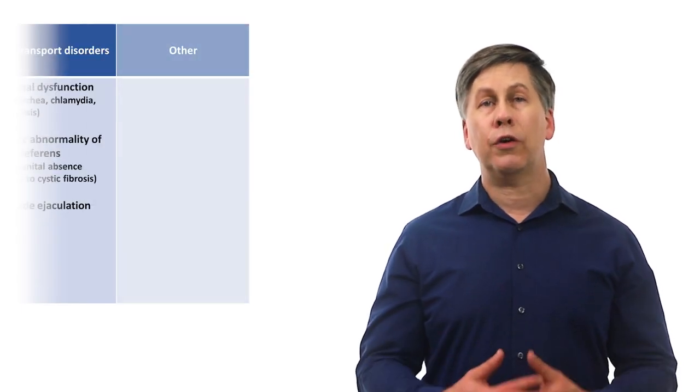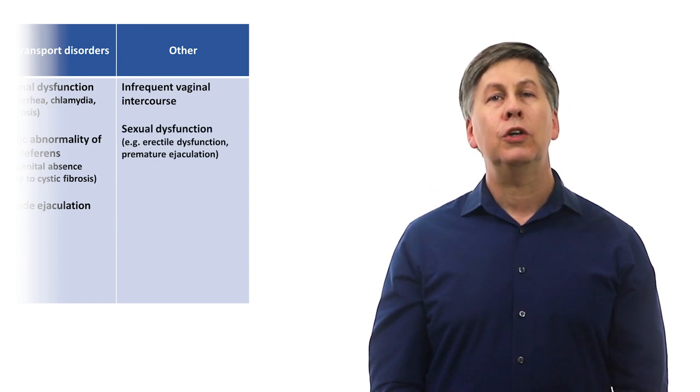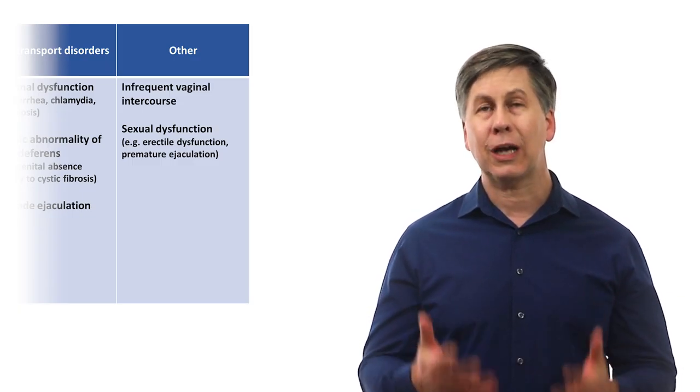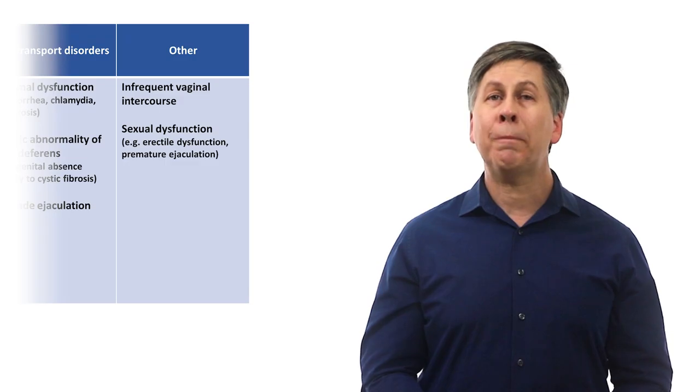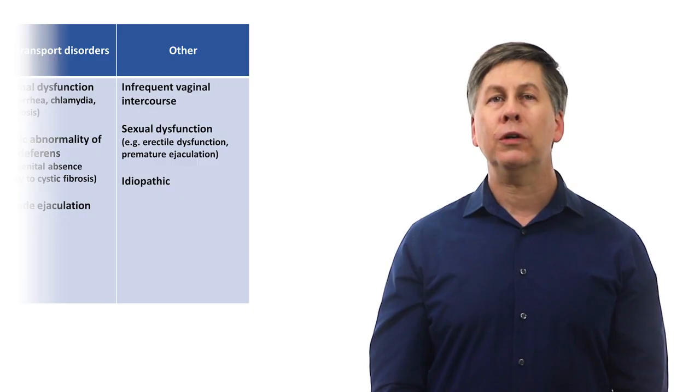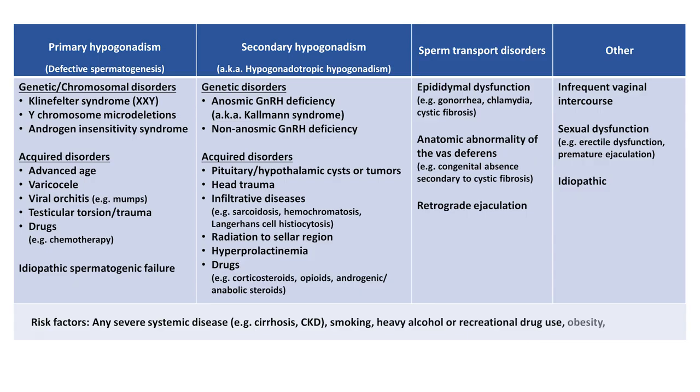The last category is other or miscellaneous. This includes infrequent vaginal intercourse and sexual dysfunction. When evaluating infertility, do not assume that your patient is fully informed about normal sexual function and the sexual activity necessary for fertilization and conception. Infertility can also be completely idiopathic. Idiopathic infertility differs from idiopathic spermatogenic failure, and that in the former, semen analysis is normal. In addition to all these etiologies listed, there are also risk factors for male infertility which may lack a clear, well-understood mechanism, but which nevertheless have been observed to have an association. These include any severe systemic disease, for example cirrhosis and chronic kidney disease, smoking, heavy alcohol recreational drug use, obesity, and malnutrition.